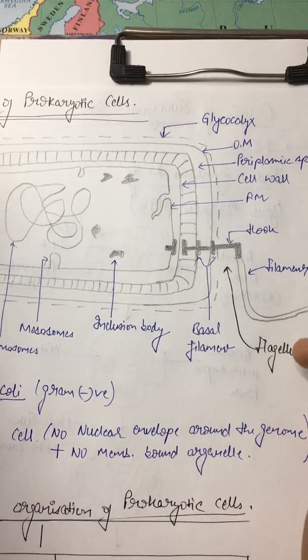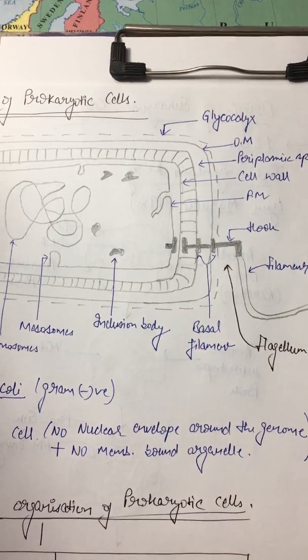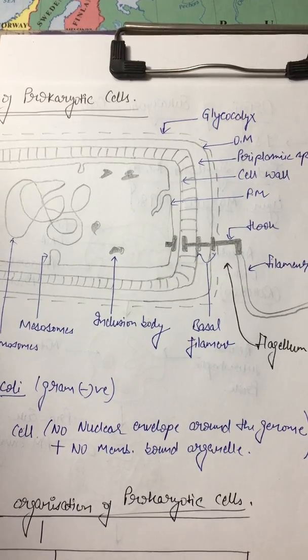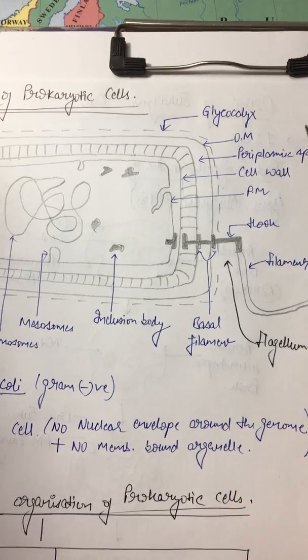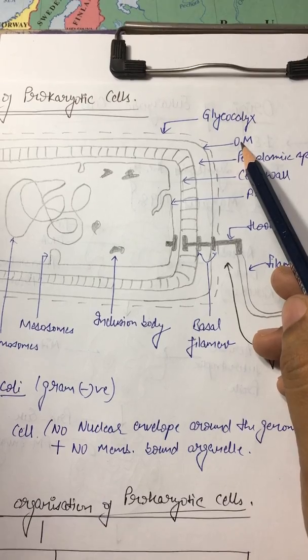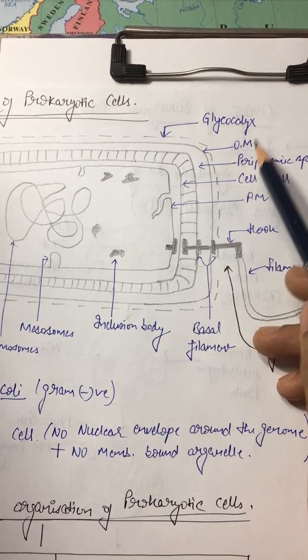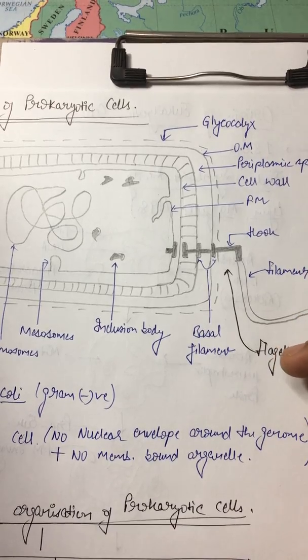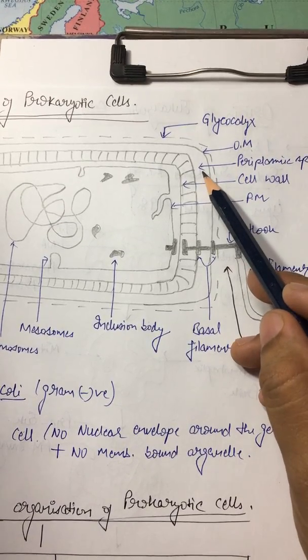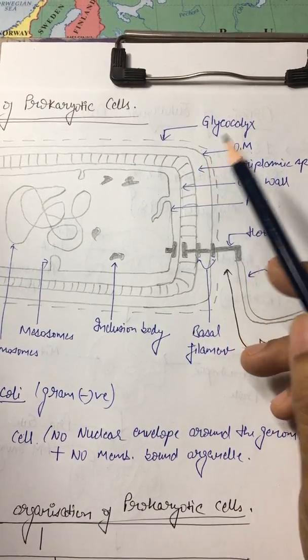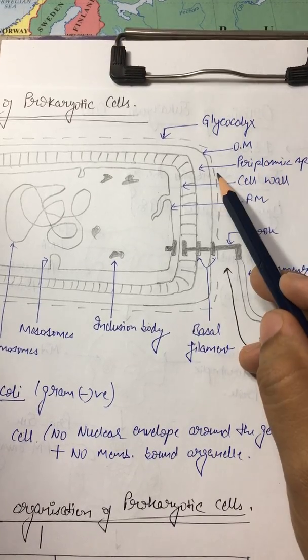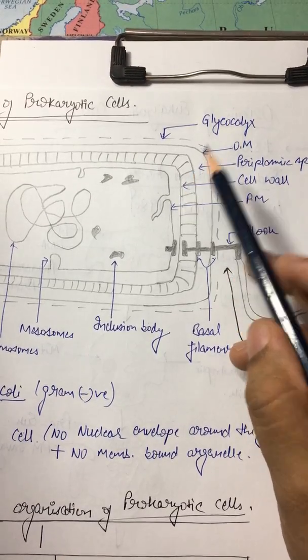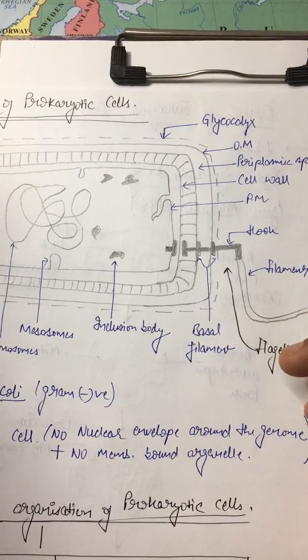Then we have outer membrane. It is made up of lipopolysaccharide. It is present only in gram-negative bacteria. Its function is protection. Then we have periplasmic space. It is a fluid-filled space between outer membrane and cell wall. It is for material accumulation and digestion.